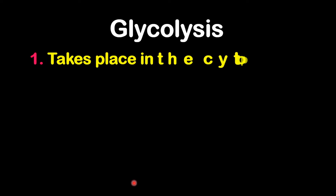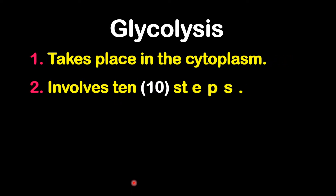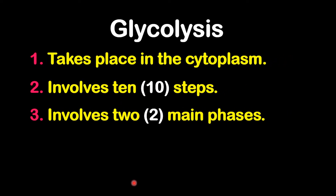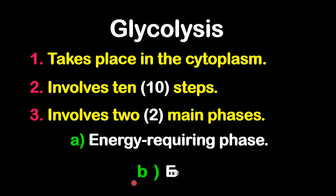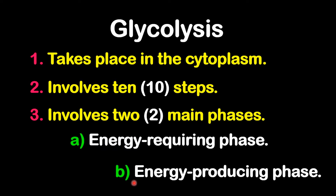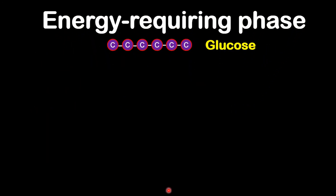Glycolysis takes place in the cytoplasm. It involves ten steps and also involves two main phases. We're not going to go through all ten steps, but we're going to focus on the two main phases: an energy-requiring phase and an energy-producing phase.